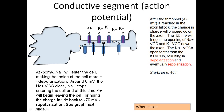Looking at the axon diagram, there are sodium voltage-gated channels (sodium VGCs) and potassium VGCs. For clarity, sodium is drawn on one side and potassium on the other, but in the real world they are intermixed — sodium voltage-gated channels and potassium voltage-gated channels are all over the axon.